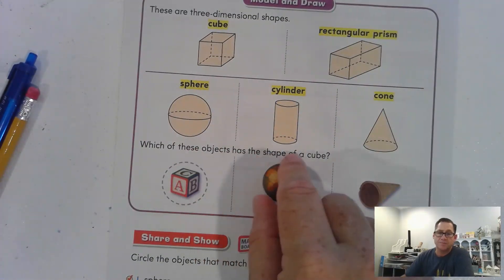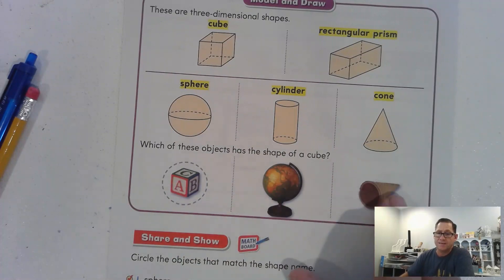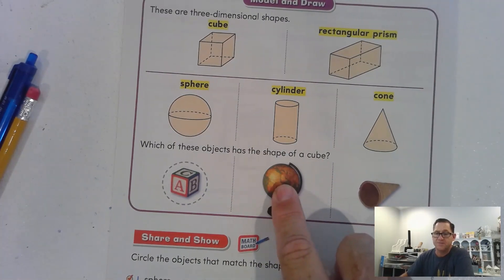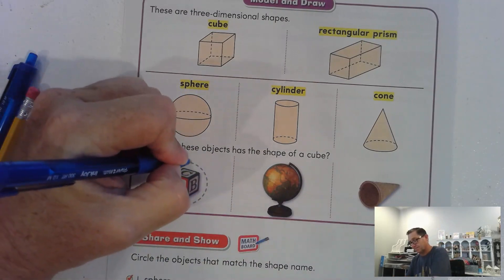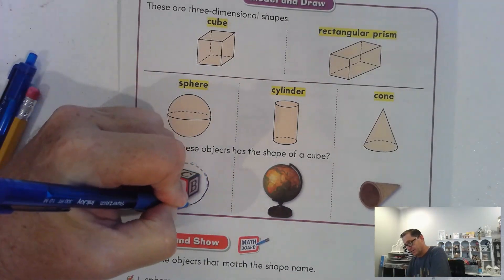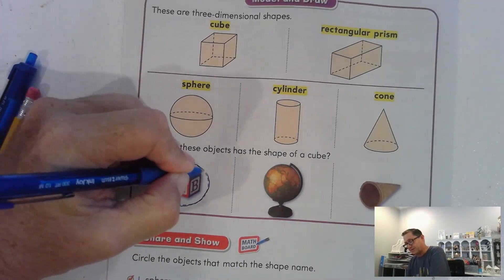And so which of these objects has the shape of a cube? Well, that's a cone. That's a sphere. So this is the cube. So that's basically what we're going to be doing today is just identifying three-dimensional shapes.